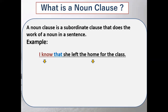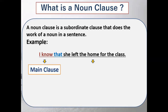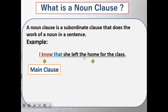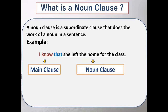For example: 'I know...' — this is basically your main clause. When you talk about 'that,' that word is the subordinating conjunction. The part of the sentence starting from 'that she left the home for the class' is the noun clause, as it has been started with a subordinating conjunction.